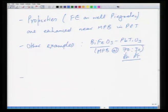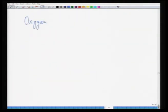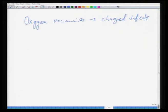The properties of PZT can also be changed by doping. Typically, most oxides tend to be deficient in oxygen, creating oxygen vacancies. These are charged defects, which increase conductivity and make the sample lossy. If you dope the material with lanthanum (La2O3), lanthanum goes to the lead site, forming PLZT.